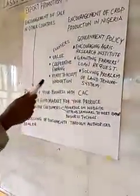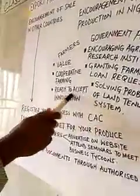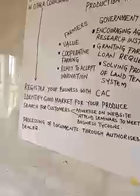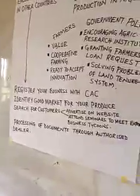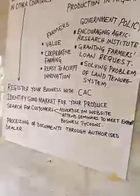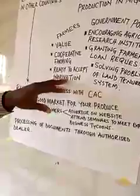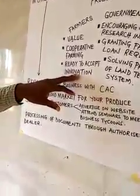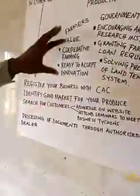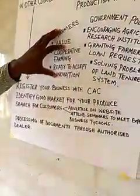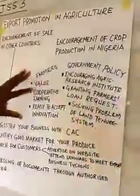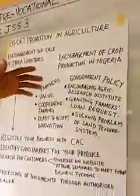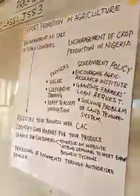The last thing from the individual perspective is being ready to accept innovation. For a farmer to be able to farm on a large scale, you should be able to accept new ideas and new ways of farming. These are the things that an individual or farmer can do in order to produce on a large scale.